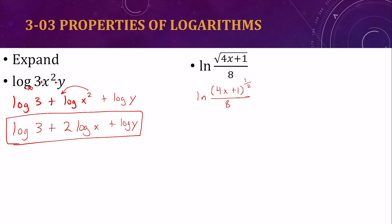And then we're dividing. So when we divide logarithms, it's written as subtraction. Top one minus the bottom one. And then we have this exponent in a logarithm which can come in front. So it's 1 half the natural log of 4x plus 1 minus natural log of 8.